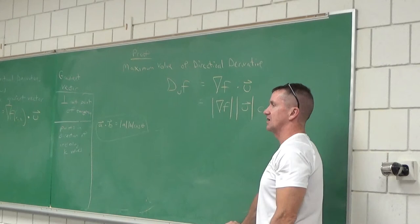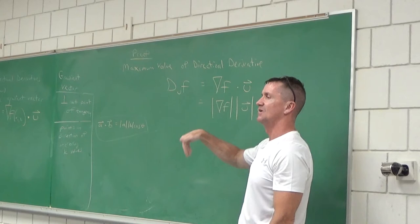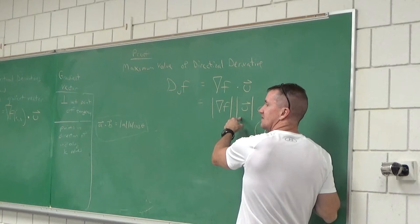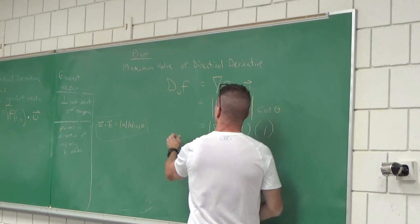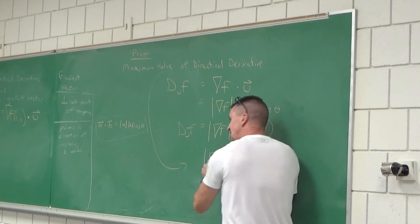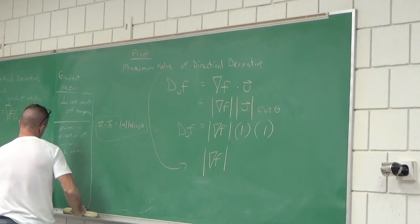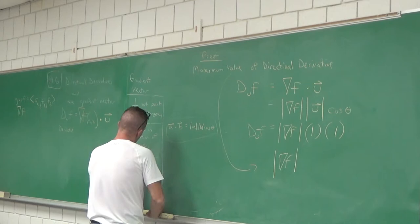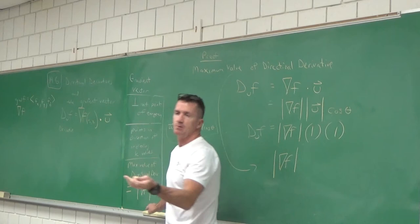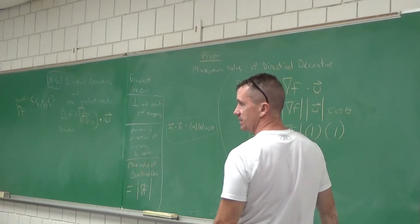So the maximum value of a directional derivative always equals just the magnitude of the gradient vector — evaluated at the point. We just proved it: this has to be 1 (magnitude of unit vector) and cosine is at most 1, so it reduces to the magnitude of the gradient vector. If a problem asks for the maximum rate of change, just get the gradient vector and take its magnitude at the given point.